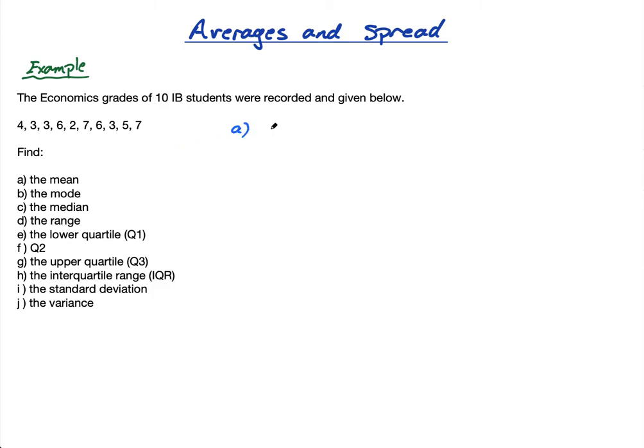So A is the mean. How do we write the mean? X bar, that's a way to write the mean. Or mu, the Greek letter mu is what we use for the mean. And what it is, is we sum these up and divide by 10 because there's 10 students. So I'm going to do 4 plus 3 plus 3 plus 6 plus 2 plus 7 plus 6 plus 3 plus 5 plus 7, all over 10, which gives me 46 over 10, which is 4.6.